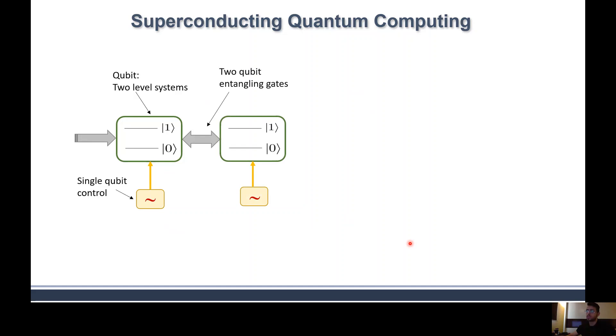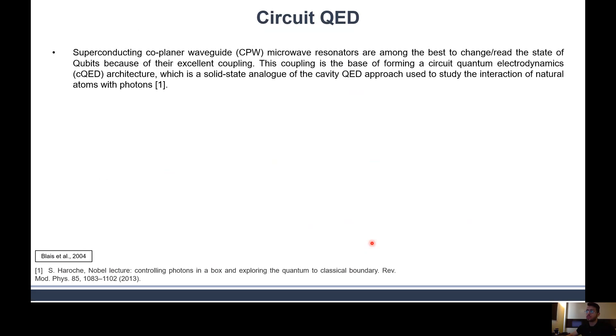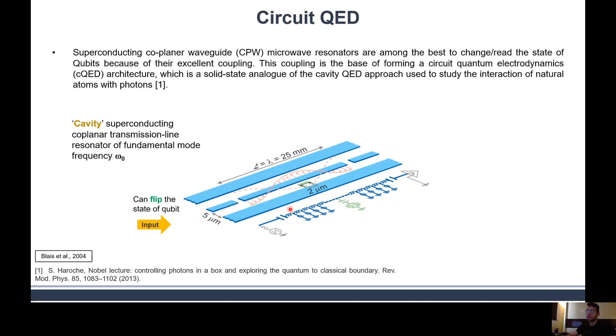We can build a qubit, or actually more than one qubit entangled together, and then we can perform readout process of that system using superconducting coplanar microwave resonators, which are among the best to read and change the state of qubits because of their excellent coupling. This coupling is the basis of forming circuit quantum electrodynamics architecture, which is a solid-state analog to the cavity QED approach for studying interaction between natural atoms and photons. This is a CPW resonator coupled to a qubit, and this coupling allows to flip and change the state of the system, or read the state of the system.